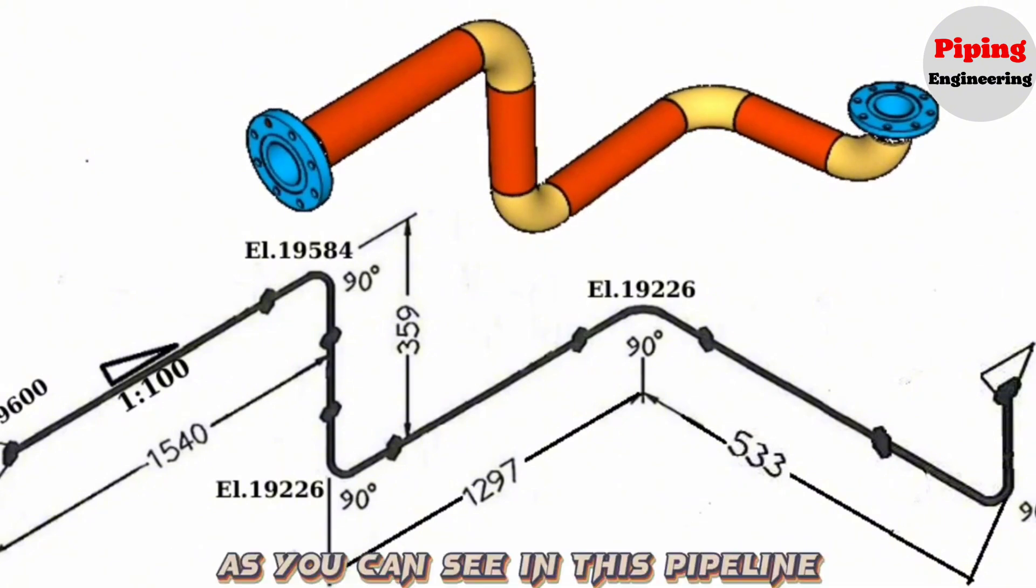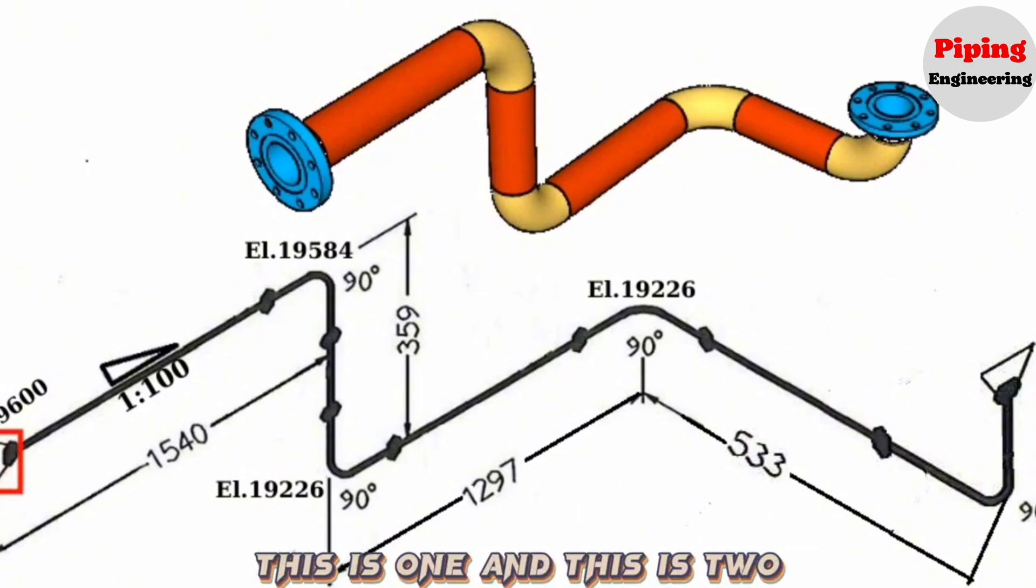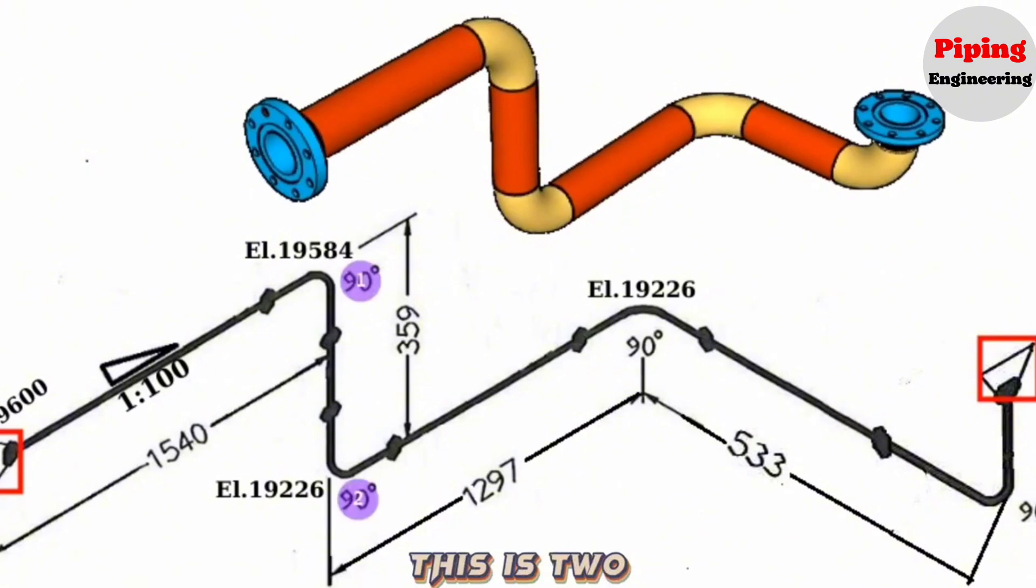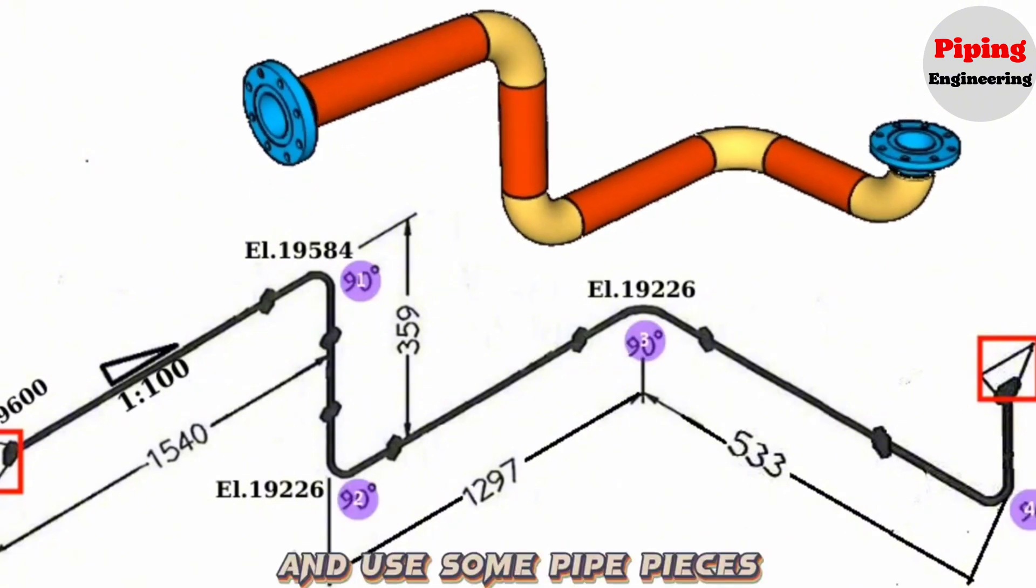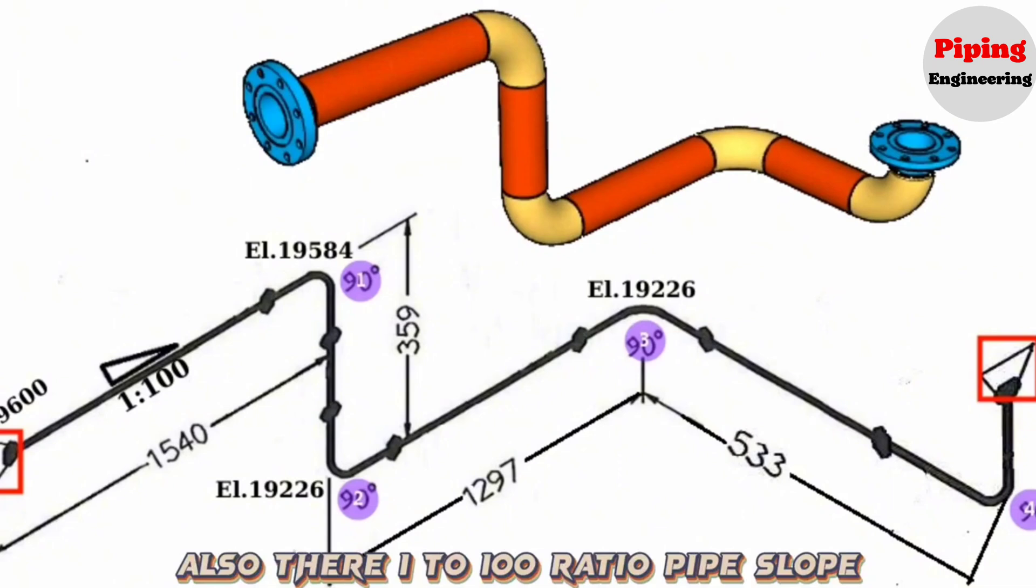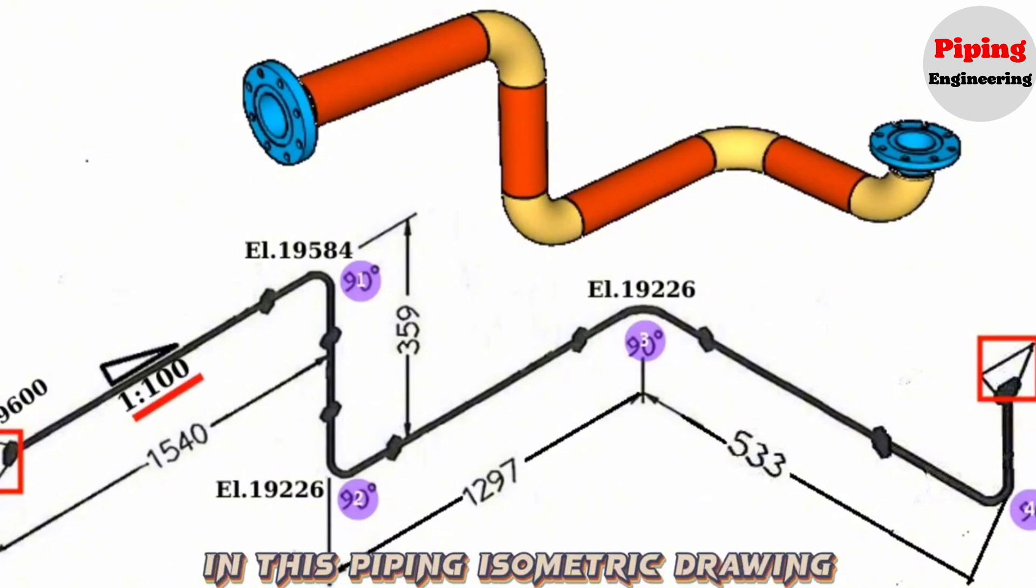As you can see in this pipeline, there are two weld neck flanges, four 90-degree pipe elbows, and some pipe pieces. Also, there is a 1 to 100 ratio pipe slope in this piping isometric drawing.